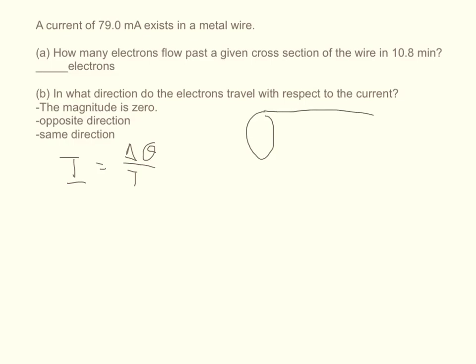So if we imagine that this is our wire blown up and the cross sectional area has this radius right here, then you know the cross sectional area of the wire based on pi times the radius squared.